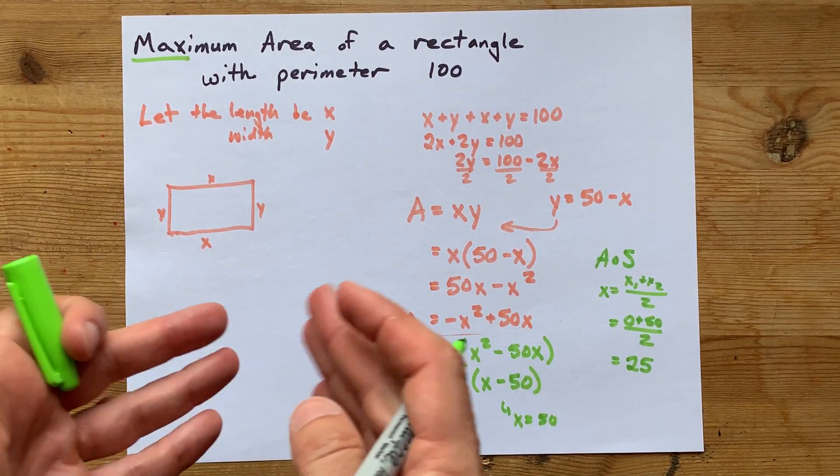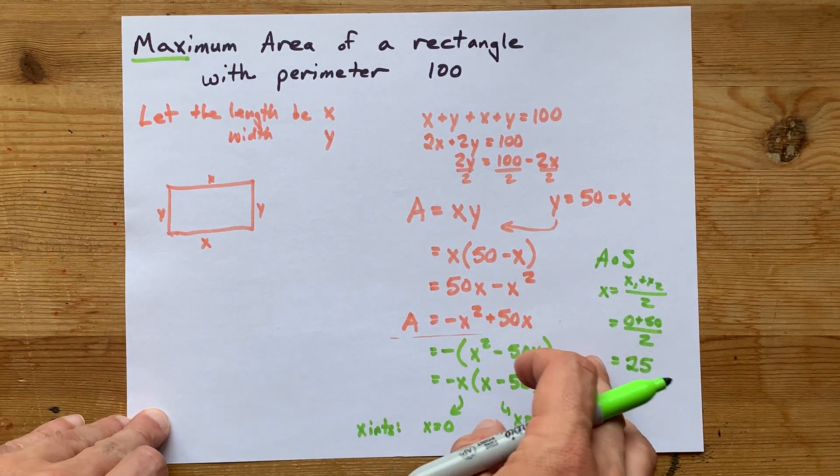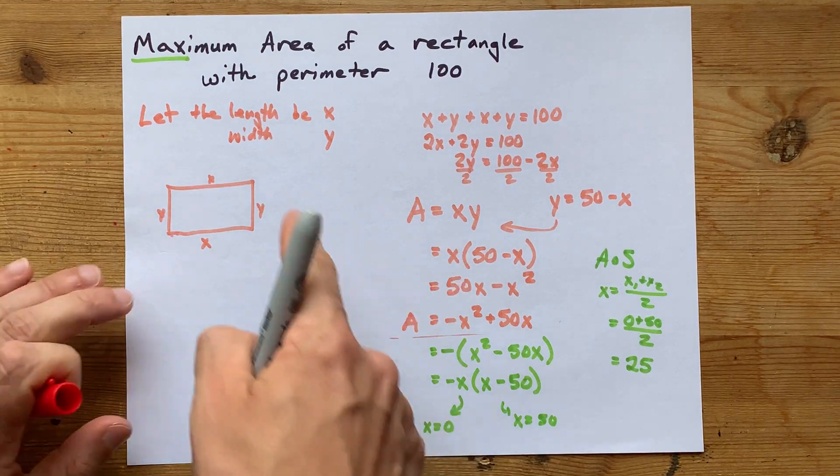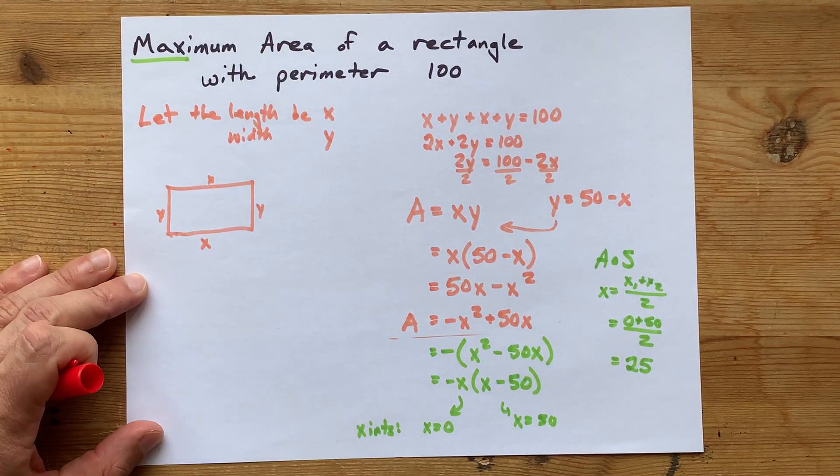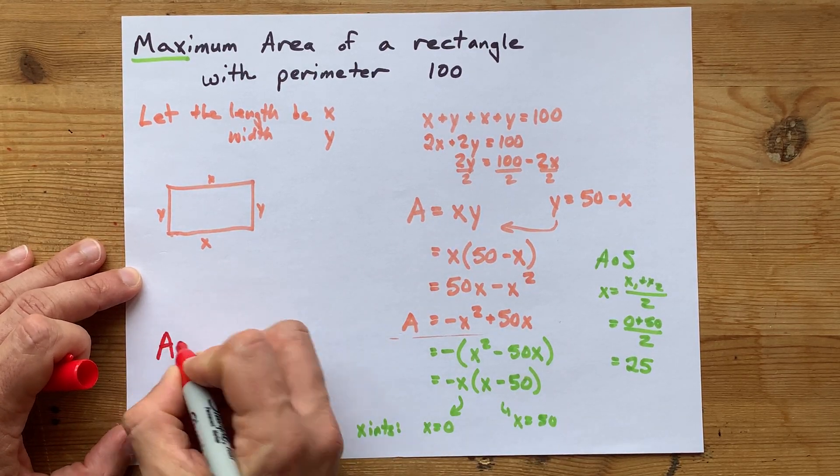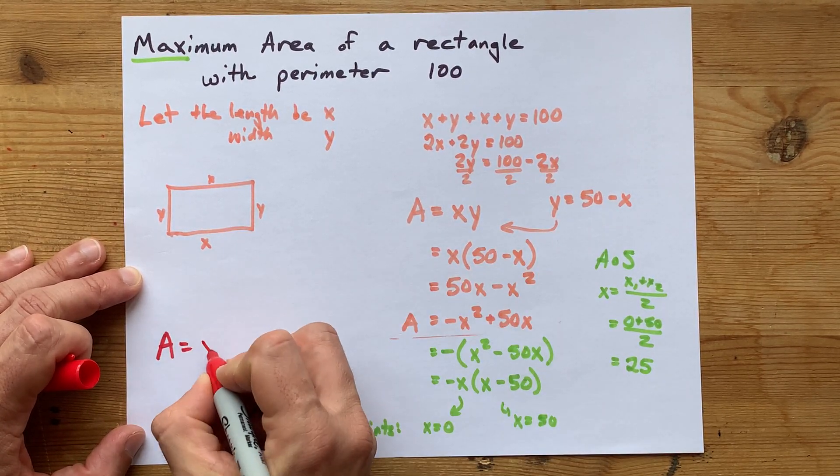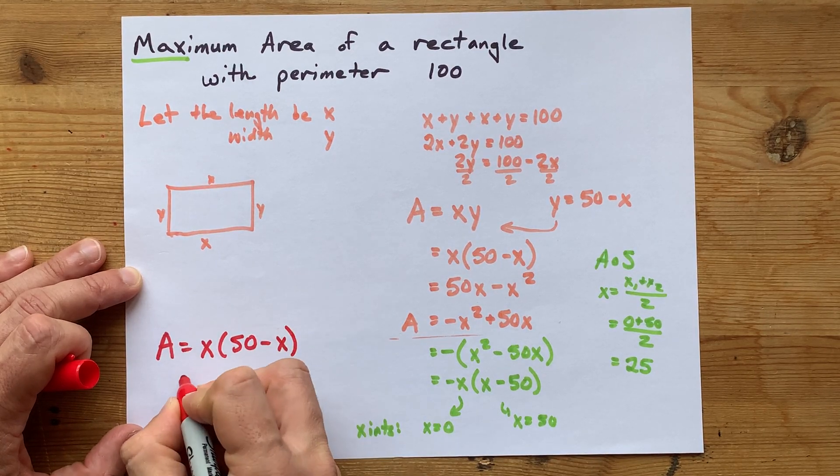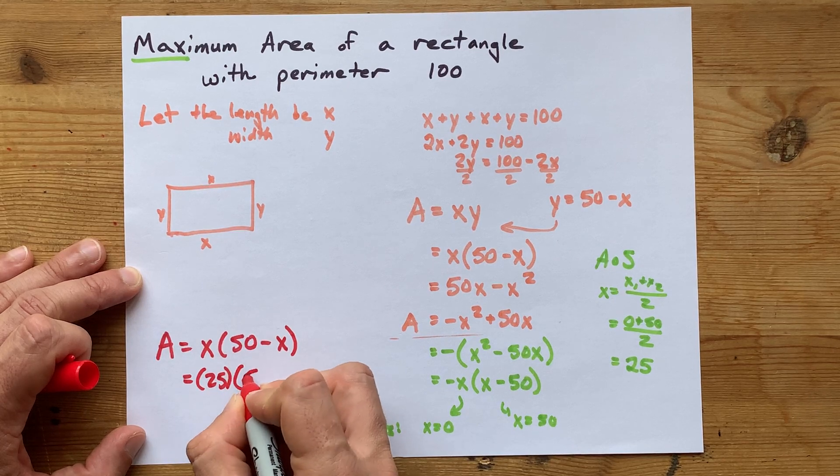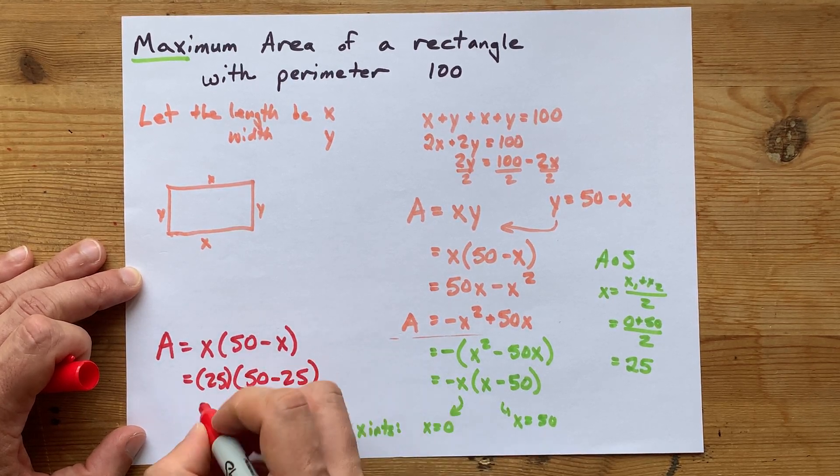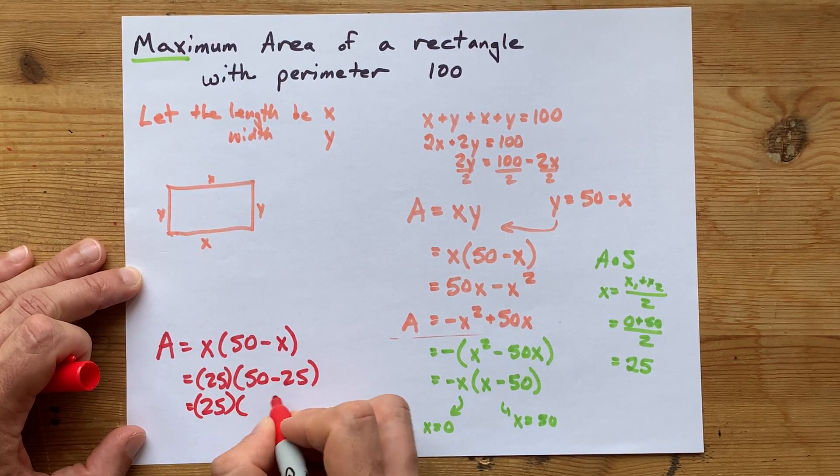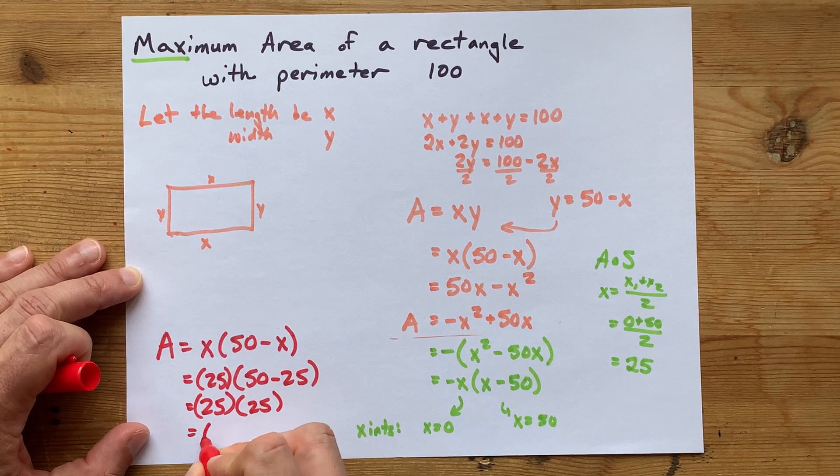And so the maximum area itself corresponds to when x is 25. Cool. Now the question itself is actually asking, what is the maximum area? Well, you can just take any of these expressions you had for area. I have x times 50 minus x, but I'm going to plug in 25 everywhere I see x. That's 25 times 50 minus 25. That's 25 times 25 again. And I get 625.